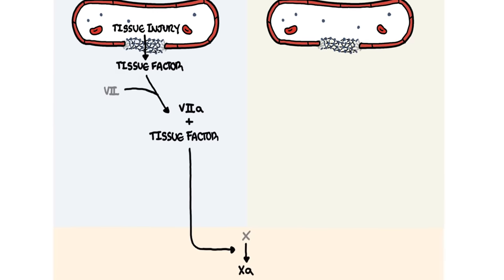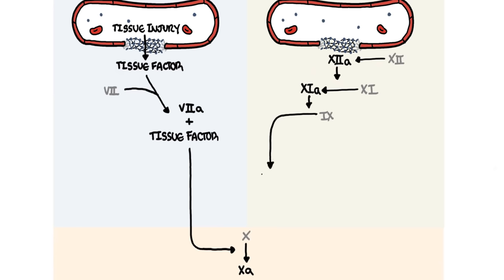The intrinsic pathway is initiated by the exposure of blood to a negatively charged surface, which activates factor 12. This in turn activates factor 11, then 9, and then 8. Activated factor 8 will then activate factor 10. So both the intrinsic and extrinsic pathways converge on activating factor 10.